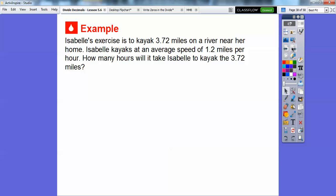So Isabel's exercise is to kayak. A kayak is like a canoe. To kayak 3 and 72 hundredths or 3.72 miles on a river that's near her home. Isabel kayaks at an average speed of 1.2 miles per hour. How many hours will it take Isabel to kayak 3.72 miles? So we're going to divide 3.72 divided by 1.2. All right, well let's first estimate.